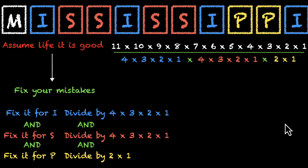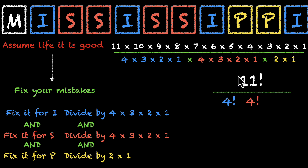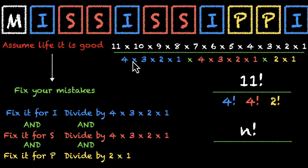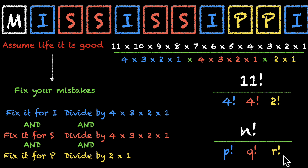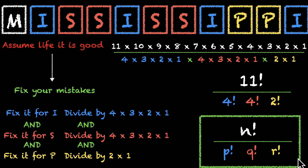Here's one more formula for situations where there are repetitions. The numerator is 11 factorial, and in the denominator we have 4 factorial, 4 factorial, and 2 factorial. Generalizing: use n factorial (total number of items) divided by the factorials of each repeated group. If something appears p times we use p!, if q times then q!, and so on — we keep dividing to correct for repetitions. Some call this a formula; I don't see it that way.